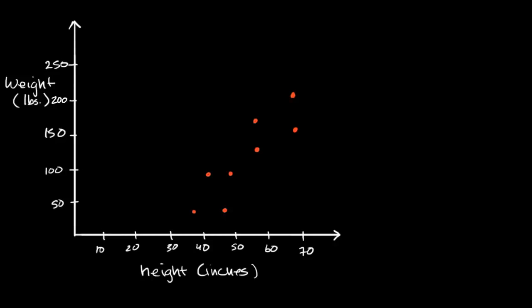So I'm interested in finding the relationship between people's height in inches and their weight in pounds. I'm randomly sampling a bunch of people, measuring their height, measuring their weight, and then for each person, I'm plotting a point that represents their height and weight combination.